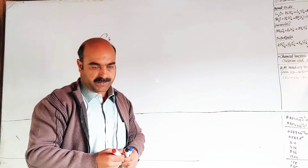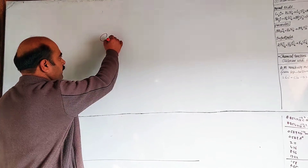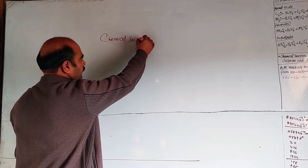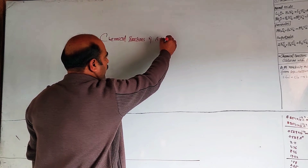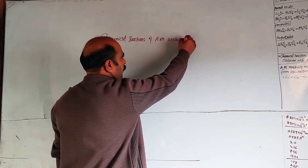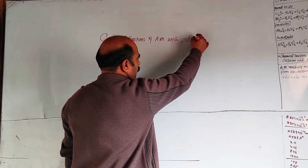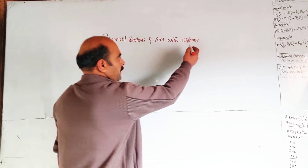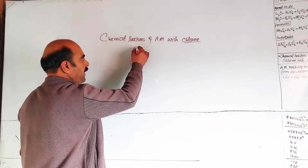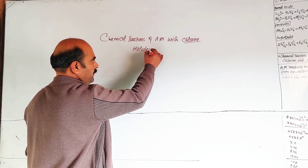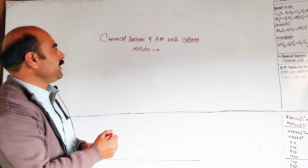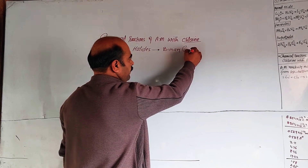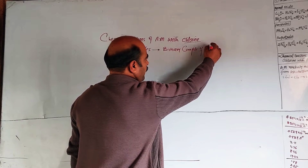New topic: chemical reactions of alkali metals with chlorine. Chlorine reactions generally produce halides — binary compounds of halogens.